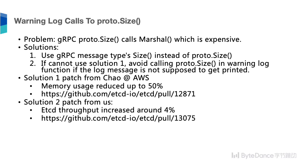The first solution was contributed by Chao from AWS, and the pull request description shows that message CPU usage can be reduced by up to 50 percent — a great improvement. Solution 2 was done by our team at ByteDance, and with our solution, etcd throughput can increase by around another 4 percent.